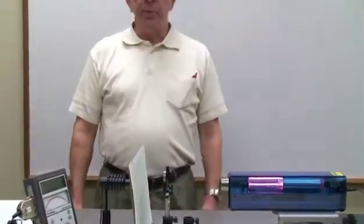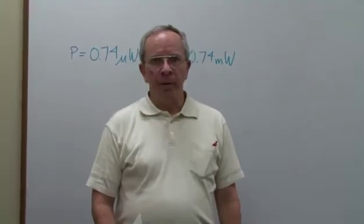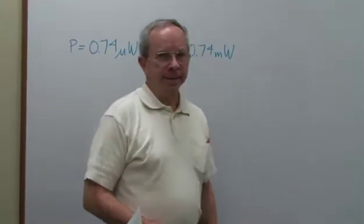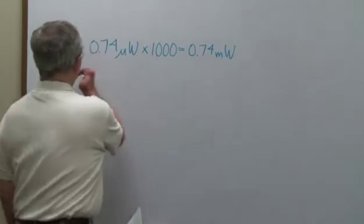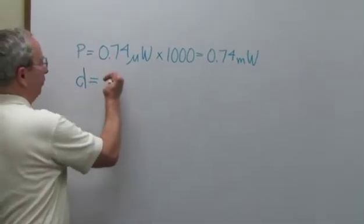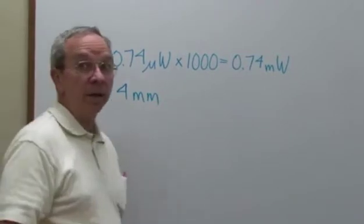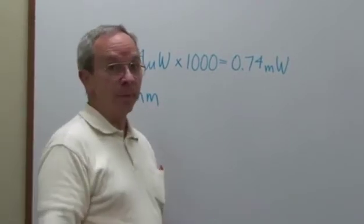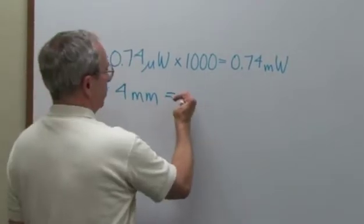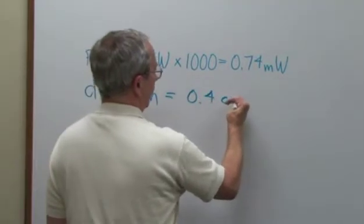Now that we have our beam diameter measurement, let's go to our data table and calculate our irradiance. So our diameter, we measure to be 4 millimeters. But we need to calculate that in terms of centimeters. So we know that is the same as 0.4 centimeters.